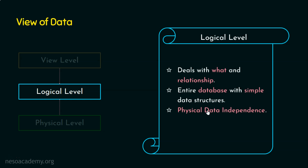What do we mean by physical data independence? The logical level is at the application level. Applications do not depend on the physical level or the physical schema — the structure of the database. So when we have an existing structure at the physical level and we make some changes in the logical level, it doesn't mean we need to rewrite the entire structure in the physical level. Applications do not depend on the physical schema, so we need not rewrite the physical structure if there is a change in the logical structure.